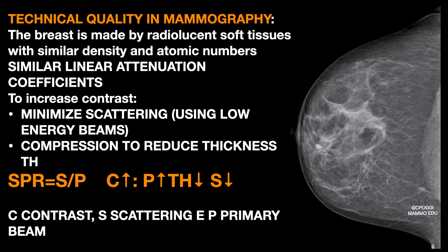Contrast is affected by the so-called SPR, scatter-to-primary ratio, which is the ratio between scattering energy S and that of the primary beam P. The contrast C improves with increasing the primary beam energy, and decreasing the breast thickness, and decreasing the scattering.